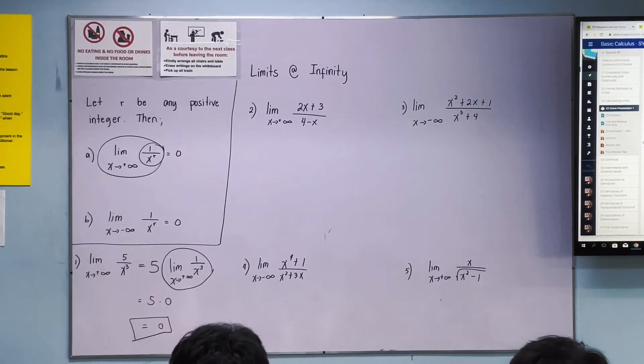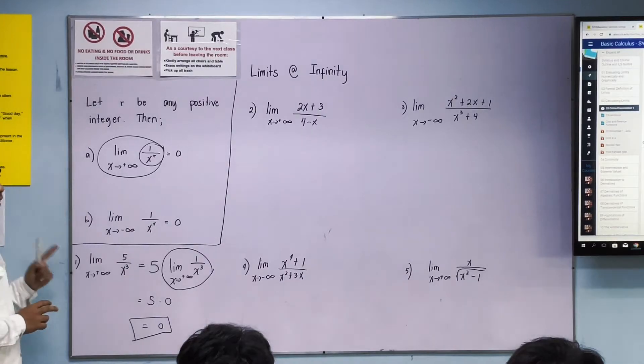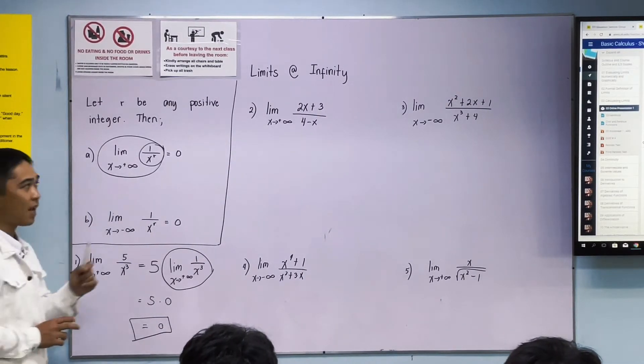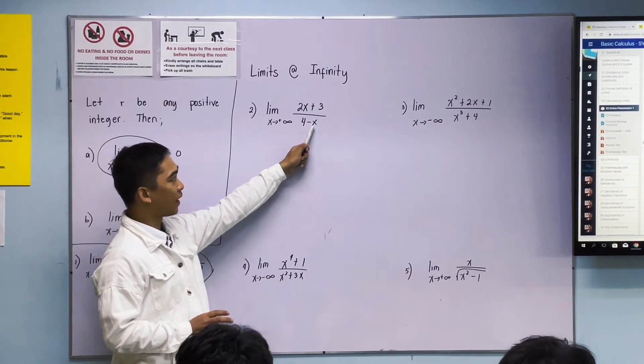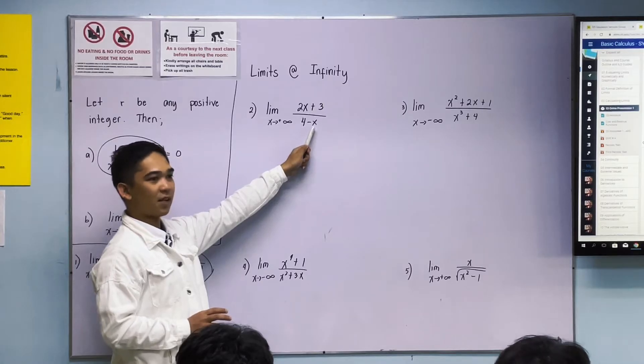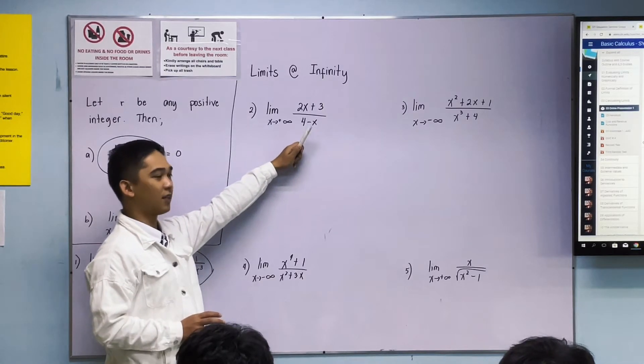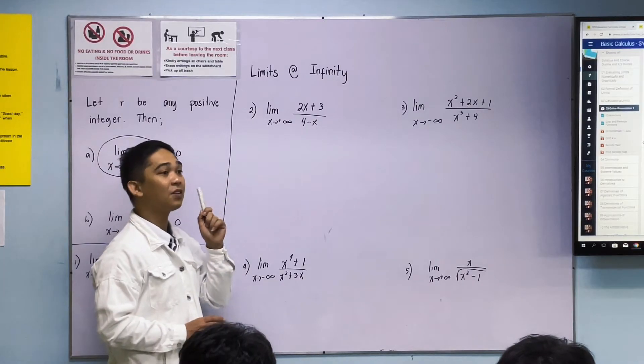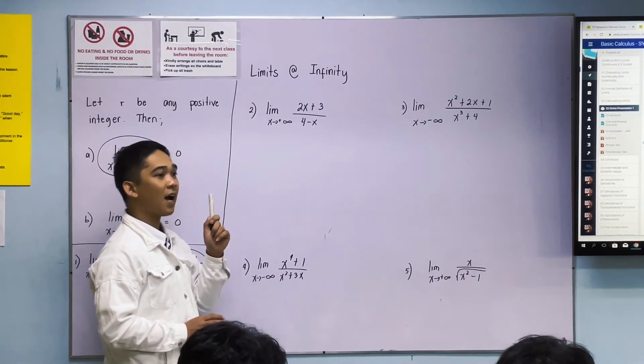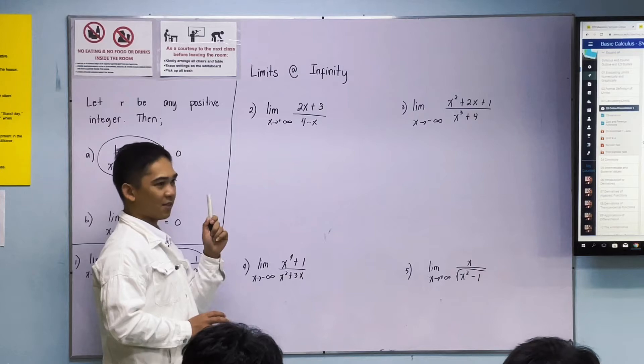What will we do with number 2? We have a variable in both numerator and denominator. First step: look at the variable in the denominator. What is the variable of our denominator? x. What is its exponent? 1. Once we've determined that, we divide all terms by x raised to 1.